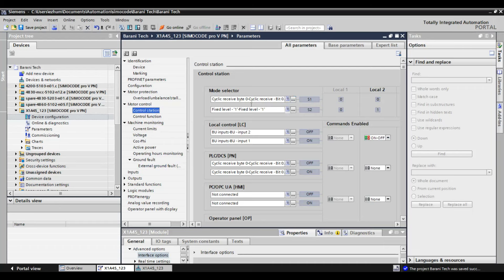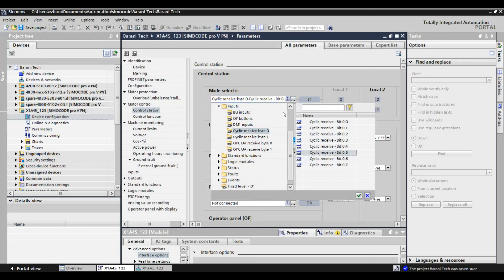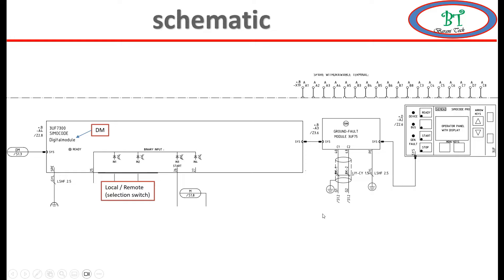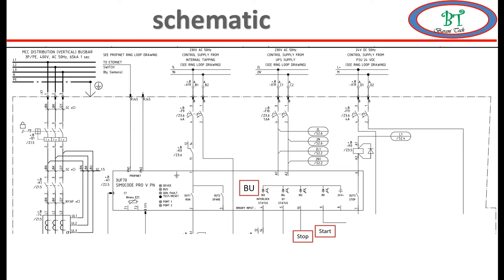By this we came to the end of protection settings. Now we go for motor control. First we will see the motor control station — this is very important to understand for on/off module. In module selection, we have S1 and S2. Activating S1 and S2 can be done by binary input or soft input from the remote end. I am going to explain using binary input. Let us consider S1 is configured by DM1 Input 1 and S2 is DM1 Input 2 as per the schematic diagram. For local start, I am going to configure BU Input 2 for stop signal and BU Input 1 for start signal.